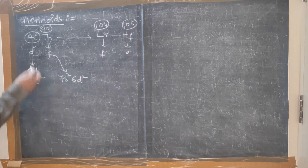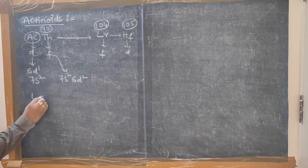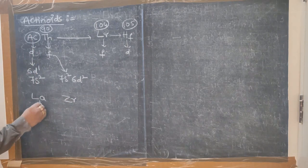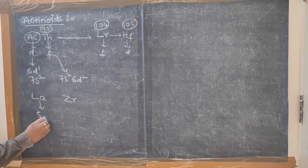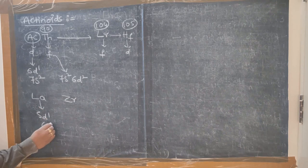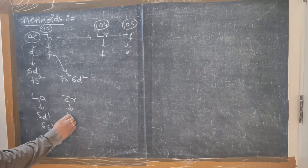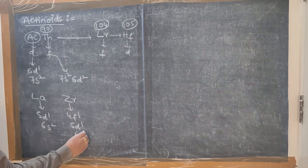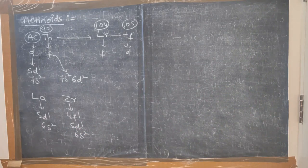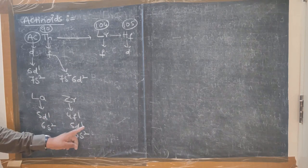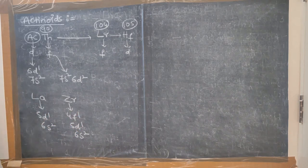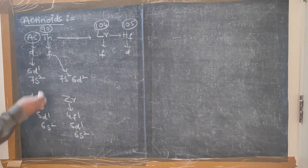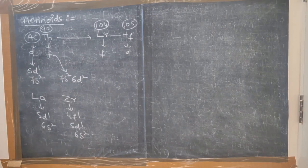Before actinium it is lanthanum with configuration 5D1, 6S2, and cerium is 4F1, 5D1, 6S2. Going from lanthanum to cerium, the 5D remains and an electron enters 4F. Similarly, from actinium to thorium, instead of entering 5F, the configuration goes 6D1 to 6D2.